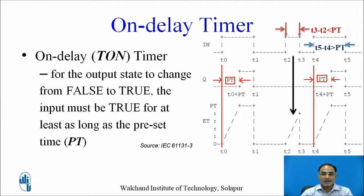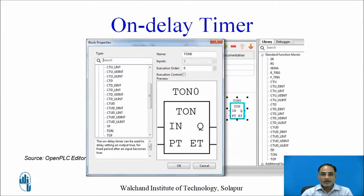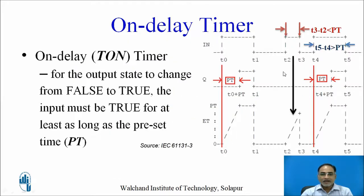The width of the input pulse should be greater than or equal to the PT value. At t4, input changes from 0 to 1 and remains true for more than PT. The output changes when ET becomes PT, so at t4 plus PT, Q changes from 0 to 1. At t5, when the input changes from 1 to 0, ET and Q both reset to 0. Similarly at t1, when input changes from 1 to 0, ET and Q reset to 0.